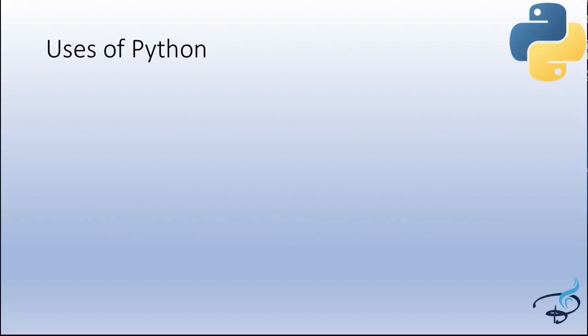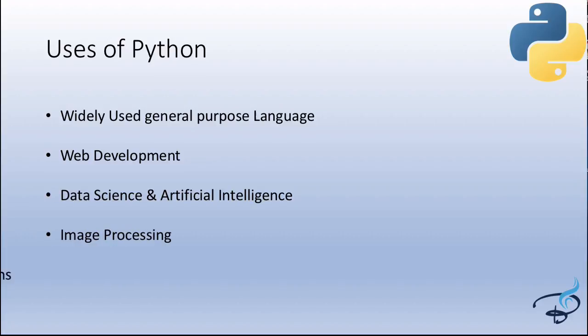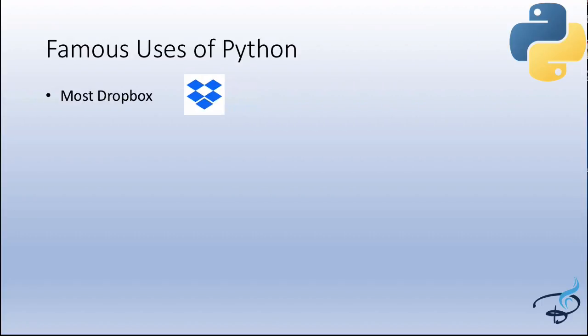Python is a very widely used general-purpose language. It is used in web development, data science, artificial intelligence, image processing, and high-level calculations. Python is so famous partly because most of Dropbox is created with Python — the creator of Dropbox has said that without Python, Dropbox would not have been possible.